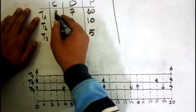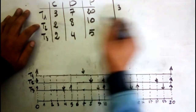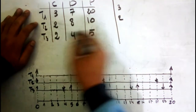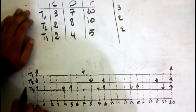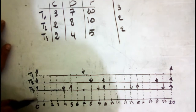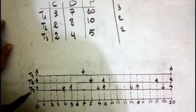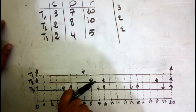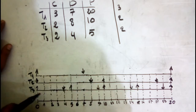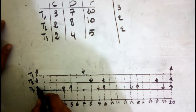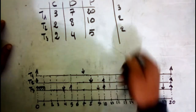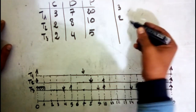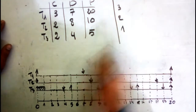Now let's start scheduling. The capacity for T1 is 3, for T2 it's 2, and for T3 it's 2. We look at the closest deadline. T3 has the closest deadline, so we run T3 for one unit of time. We update its remaining capacity to 1 because we executed one unit of time.